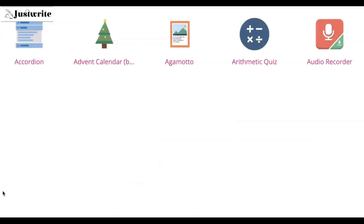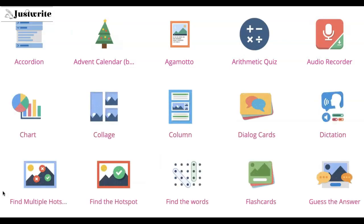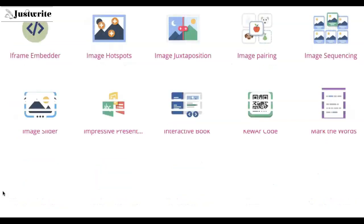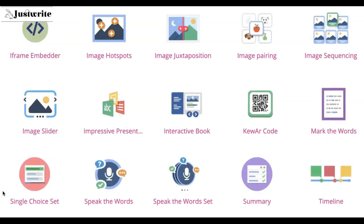There are also image sliders, and content can be arranged in various column types. Inside a presentation you can even add various interactivities like hotspots. The list is really huge — more than 30 varieties of H5P content types you can create.